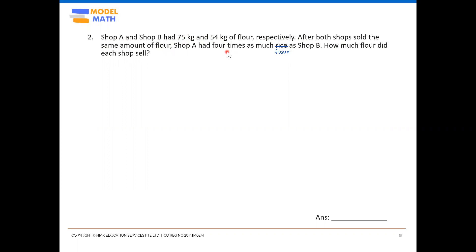Should we use a model or a Before-Change-After diagram to record the information? In this case, a Before-Change-After diagram is more helpful since actual masses are already given at the start. A model would be more useful if a comparison statement were given at both the beginning and the end, but here the actual masses are given from the beginning, so we'll use the Before-Change-After diagram.